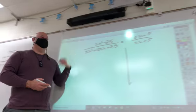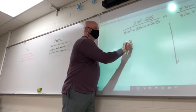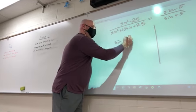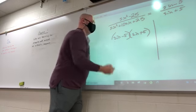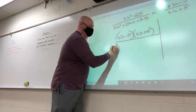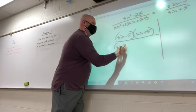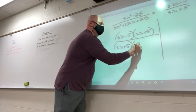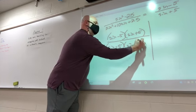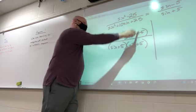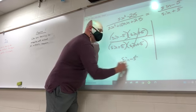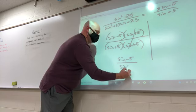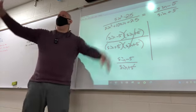Factor. What's my numerator factor into? Sine minus 5, sine plus 5. What's my denominator factor into? Sine plus 5 and sine plus 5. And then? There you go. And I'm left with? Sine minus 5 over sine plus 5.